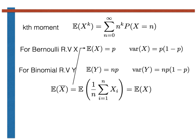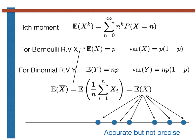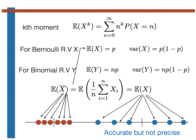For a Bernoulli random variable, this process is particularly simple. As the expectation for this type of random variable is equal to the parameter of the distribution, any sample mean that we calculate is an estimator for the parameter. If this sample mean is calculated using a small number of samples, the estimate will be accurate but not particularly precise. If, however, a large number of samples are taken, the estimator will be both accurate and precise for a Bernoulli random variable.